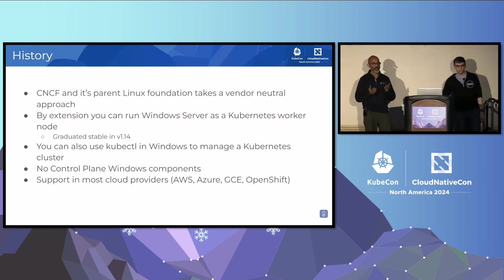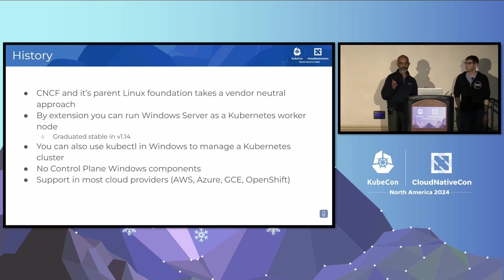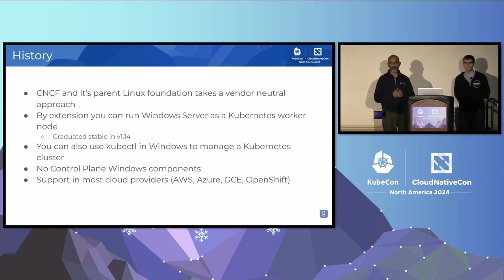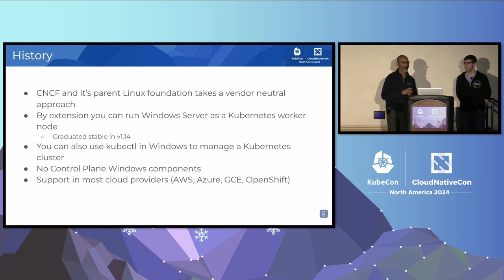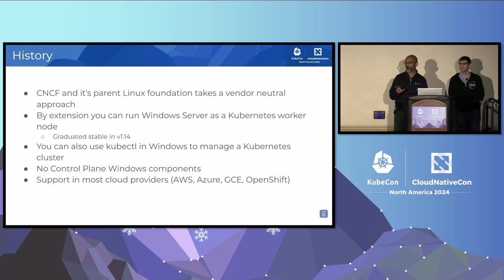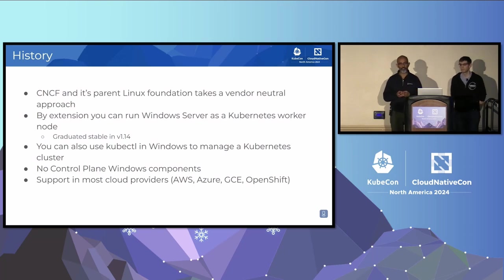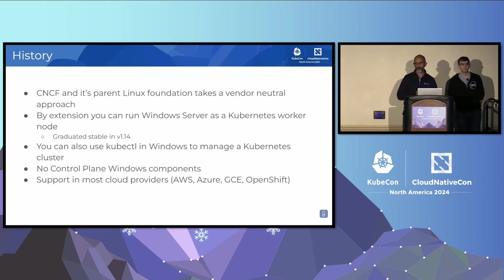Just like how you can use a Windows server as a Kubernetes worker, by extension you should be able to control your cluster using kubectl just as you do from Linux. You can run kubectl on your Windows client and do pretty much everything you can do on your Linux client. The only thing to call out is there are no control plane components on Windows — things like API server are Linux only. Everything with Windows is just on the worker side. Support for Windows is present in all major cloud providers: AWS, Azure, GCE. OpenShift is not technically a cloud provider but is a major Kubernetes distribution and that supports Windows too.